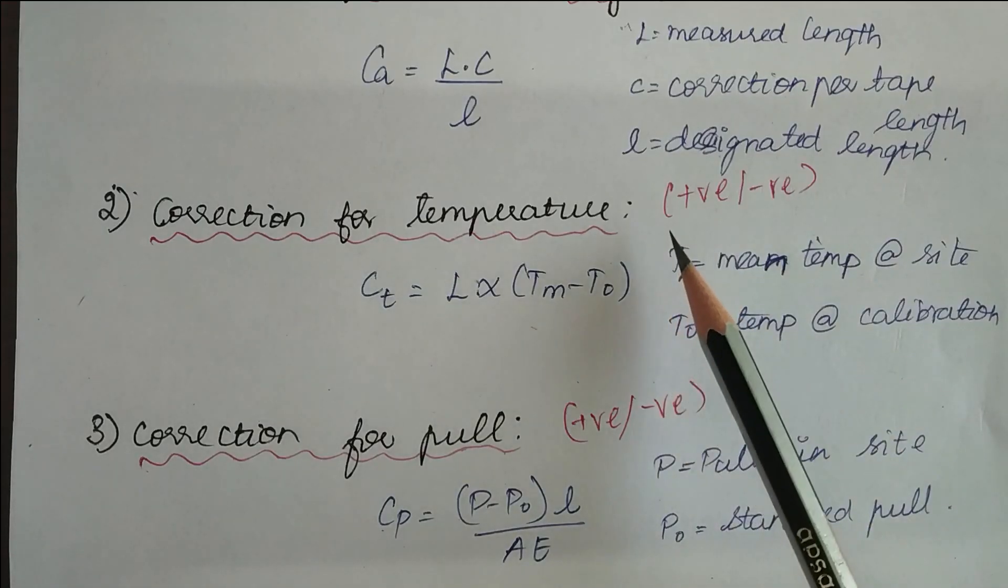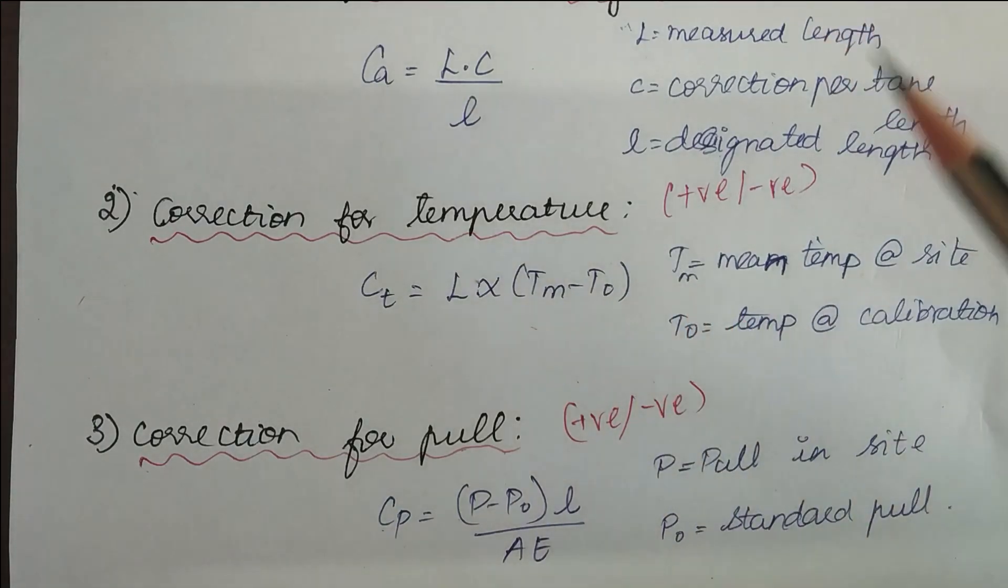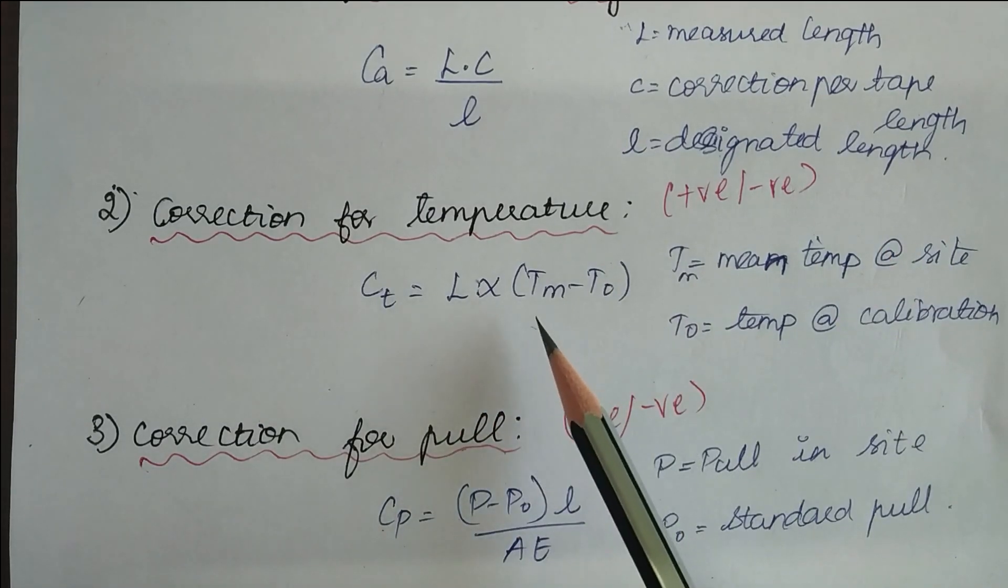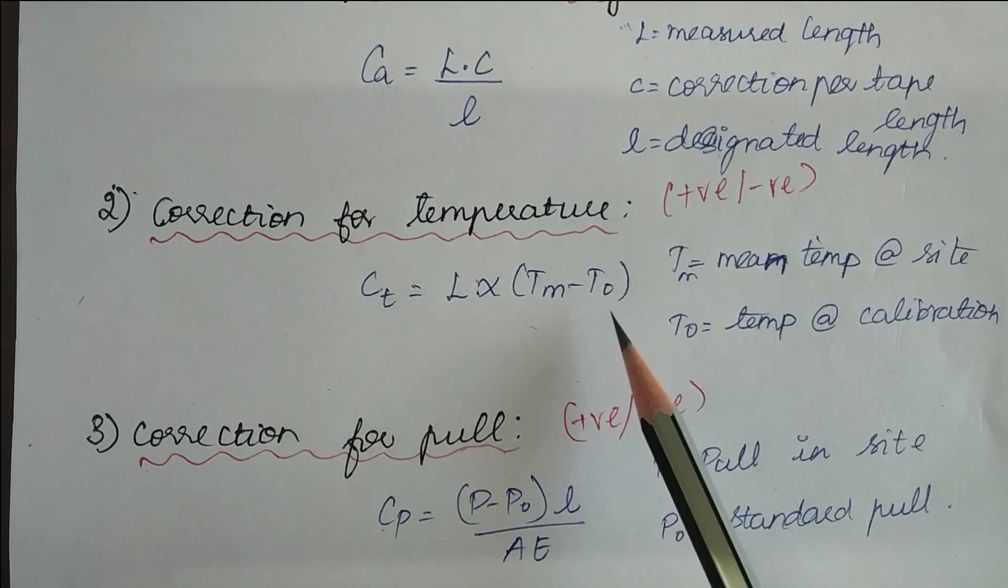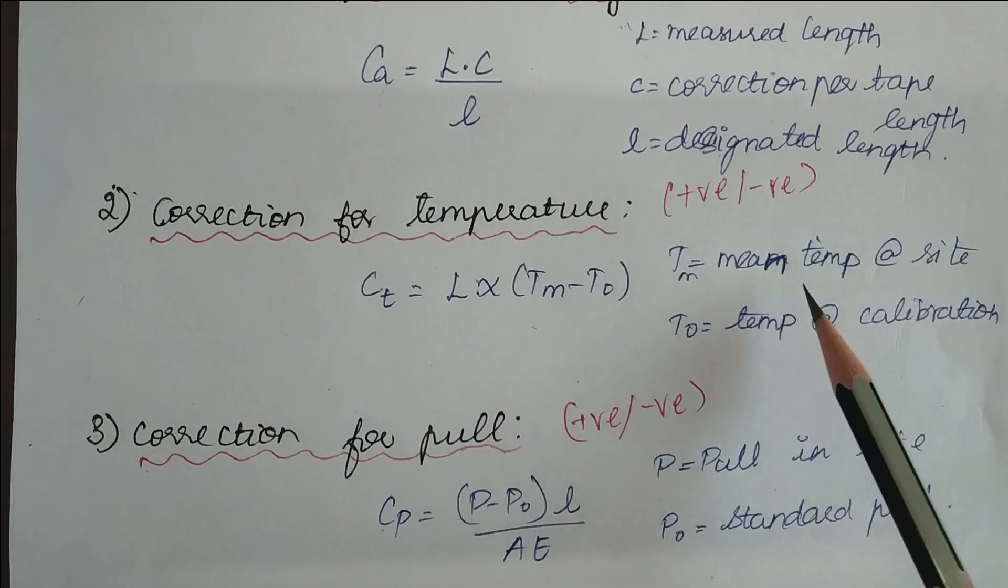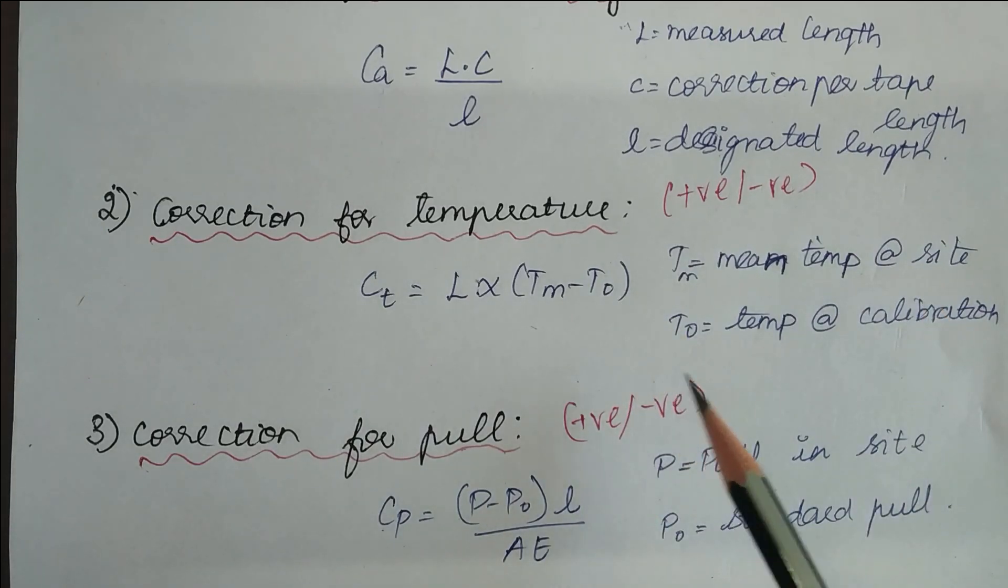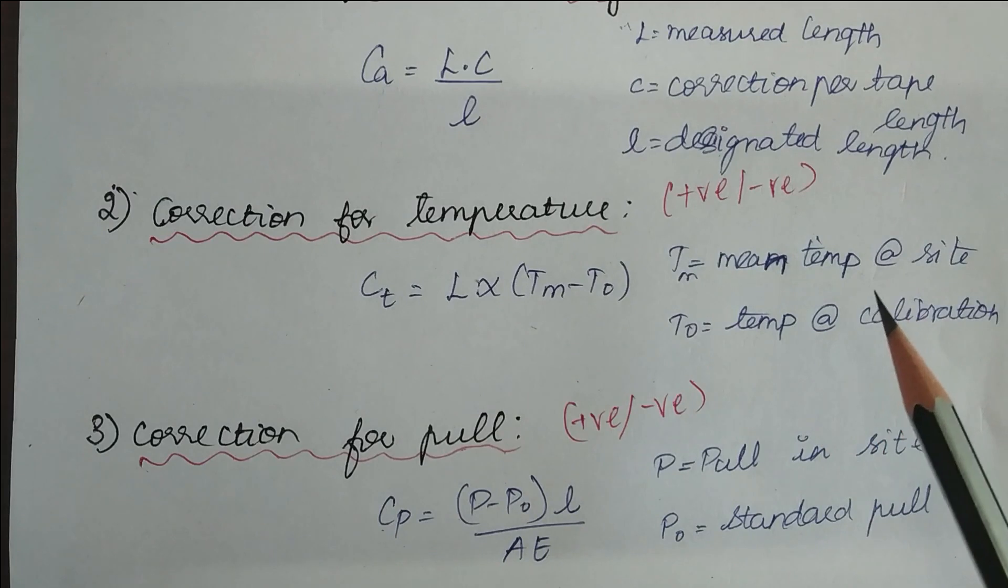Next is correction for temperature. Like absolute length, the correction can be positive or negative depending upon the condition. The formula is L alpha times (Tm minus T0), where Tm is the mean temperature at the site. There may be many temperatures at the site. We have to take the mean of it, and T0 is the temperature at which it is calibrated at the factory.